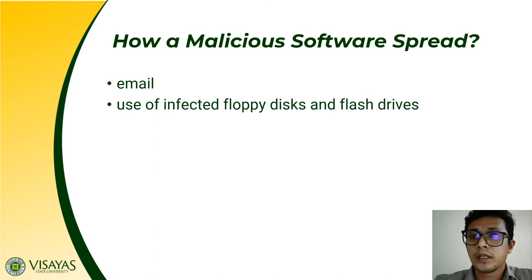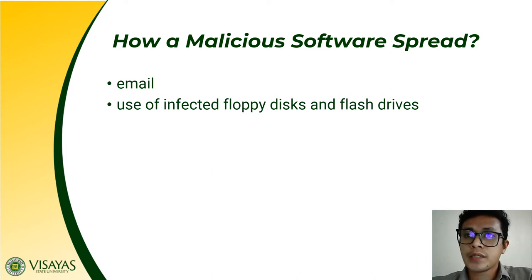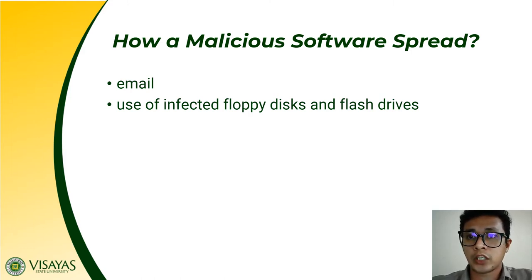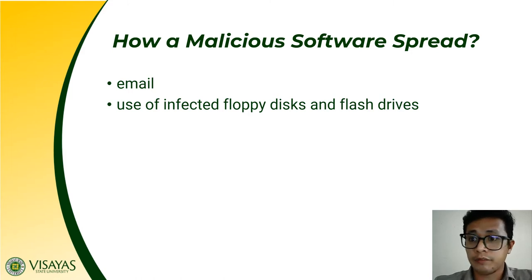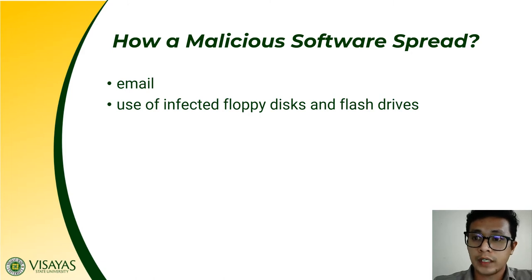One of these methods is what we call email. How does malicious software spread through an email? When you say email, this is one way to spread malicious software, and this is short for electronic messaging. Some of these emails contain attachments. When these attachments have been downloaded and opened on your computer, this malicious software has now been activated. So the moment you download an attachment which contains malicious software and open that attachment, the malicious software also gets activated and can perform malicious actions on your computer.